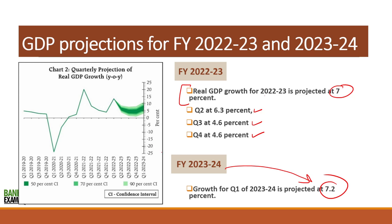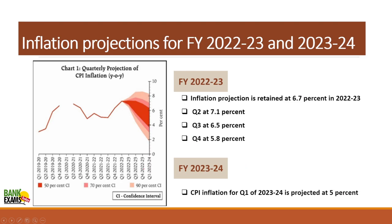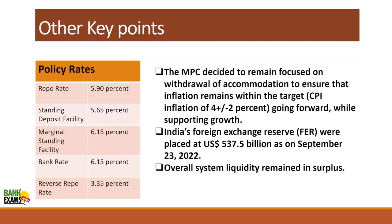Inflation is projected at 6.7 percent for the year 2022-23. For Q2 it will increase to 7.1 percent, Q3 at 6.5 percent, and Q4 at 5.8 percent. For FY 2023-24, in the first quarter, inflation is projected at 5 percent.